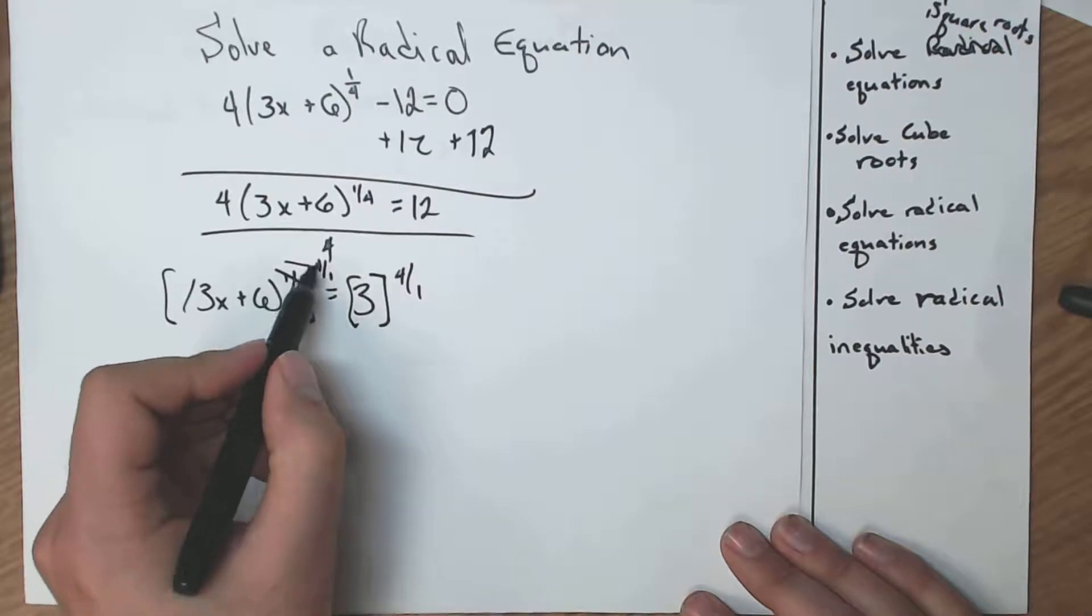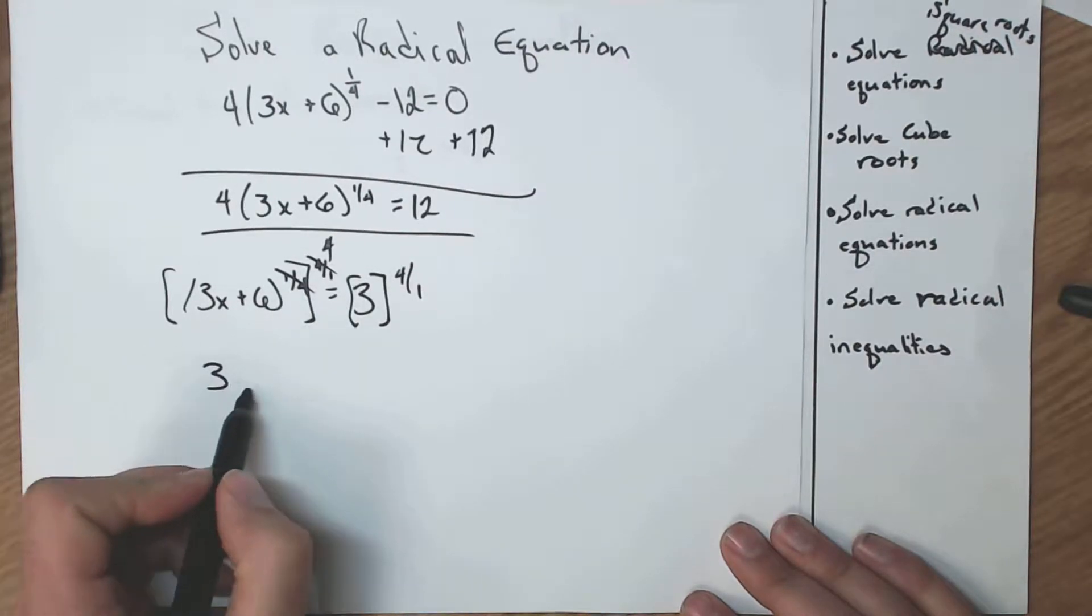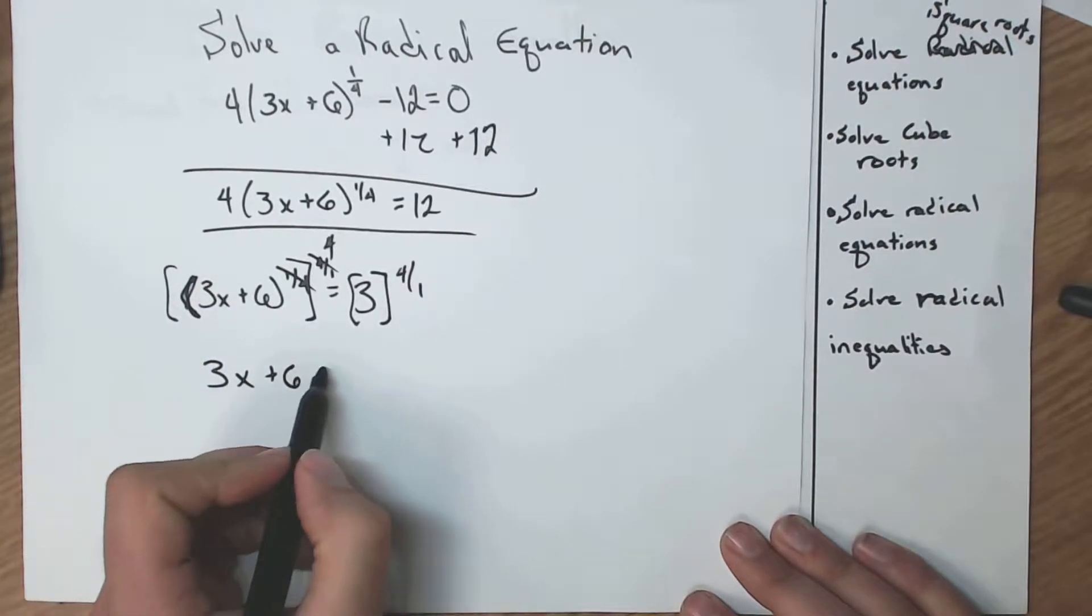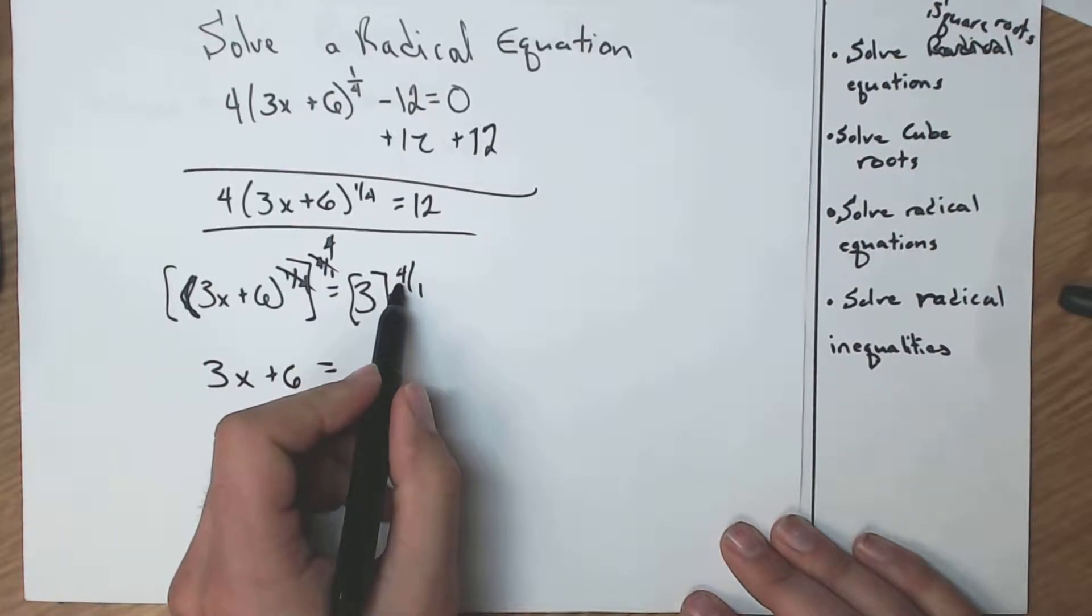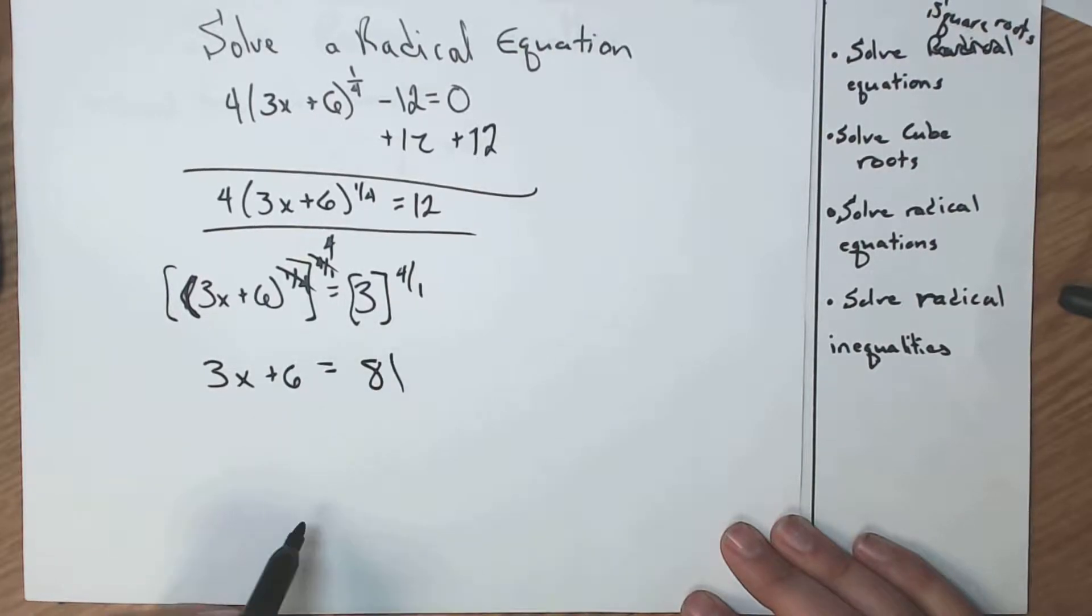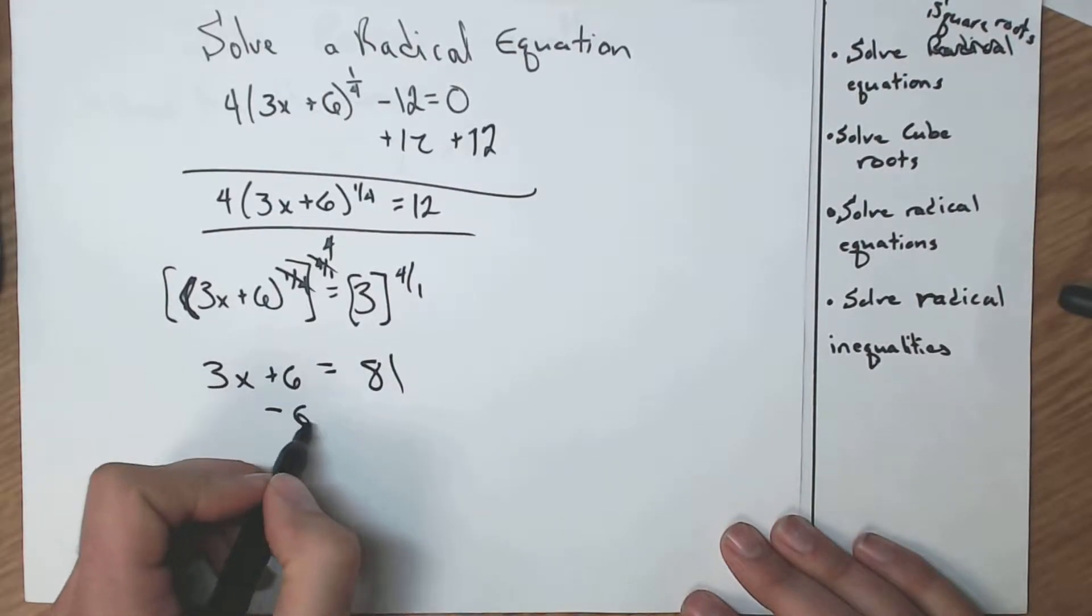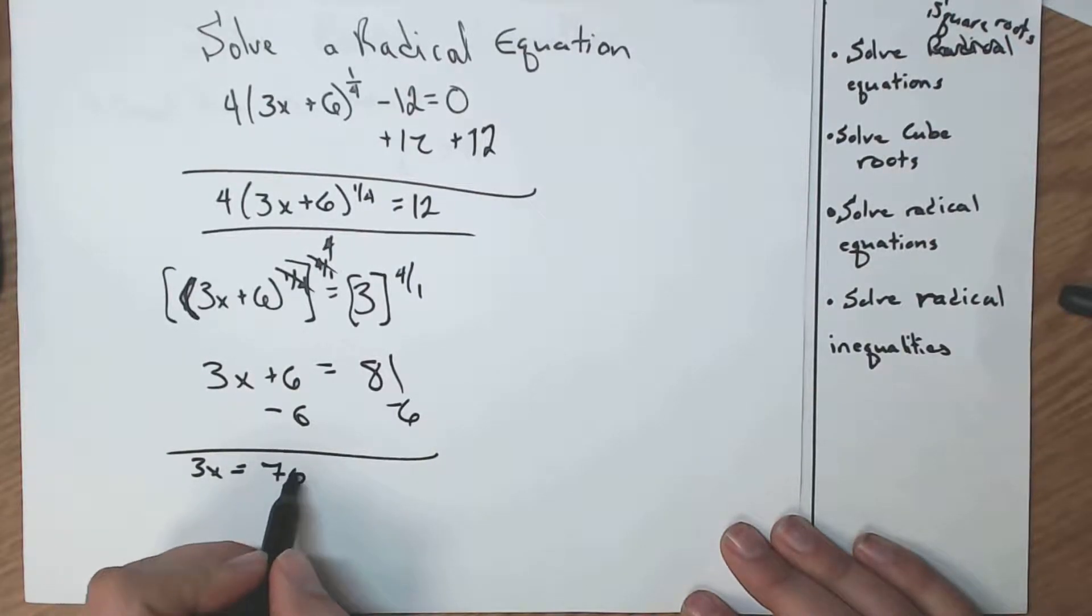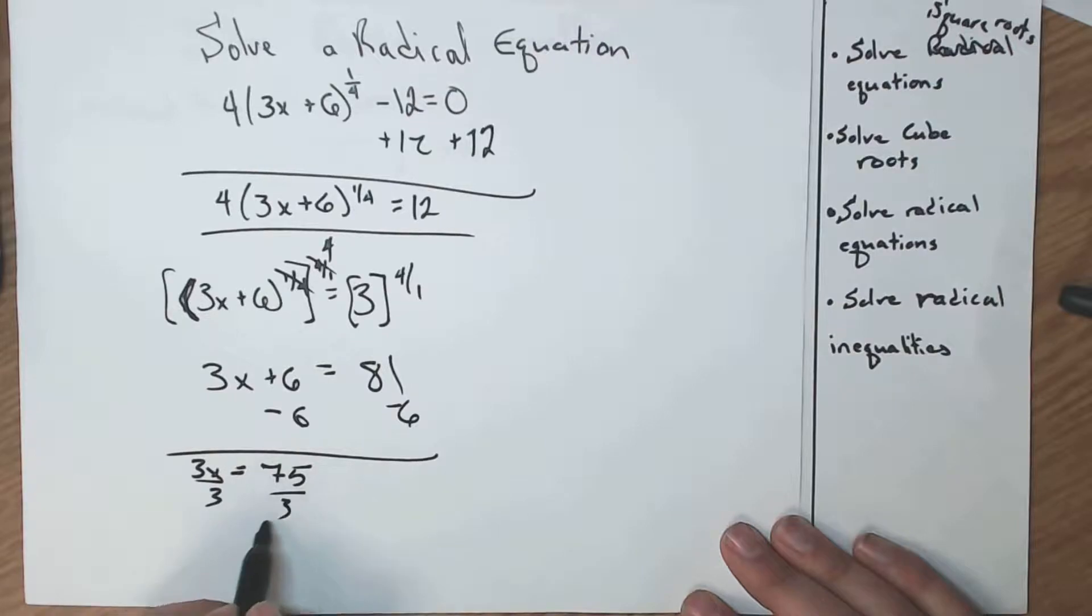Now on the left, these two cancel out and become a 1. I'm going to have to do 3x plus 6. That is a parenthesis. All right. Equals 3 raised to the 4th power, which is 81. Good job. Minus 6. 3x equals 81 minus 6. That's 75. Divided by 3 on both sides, and we find that x is 25.